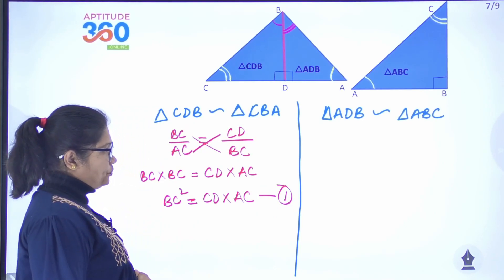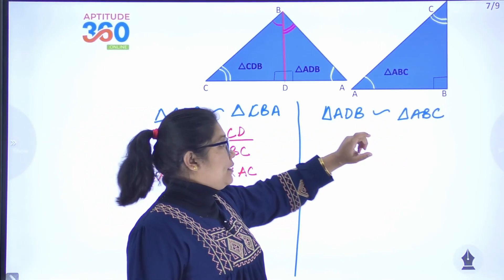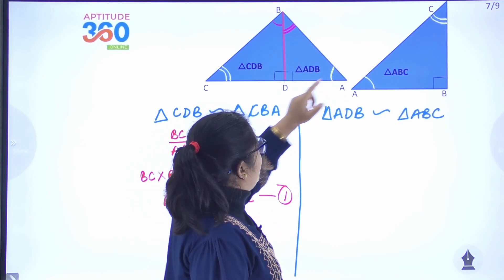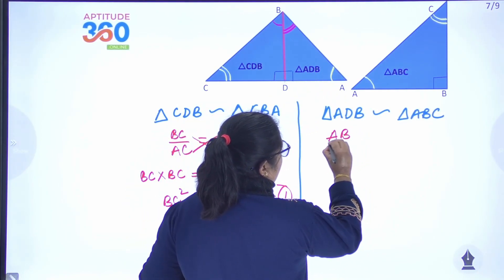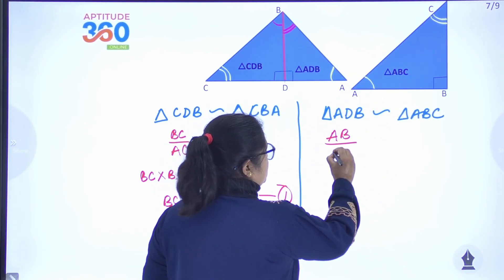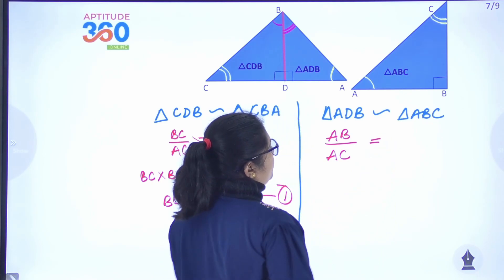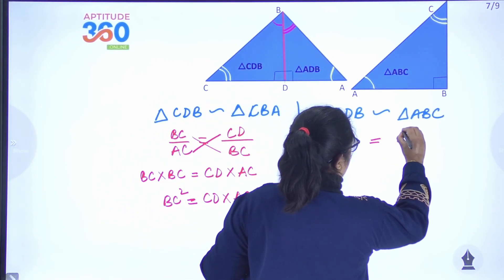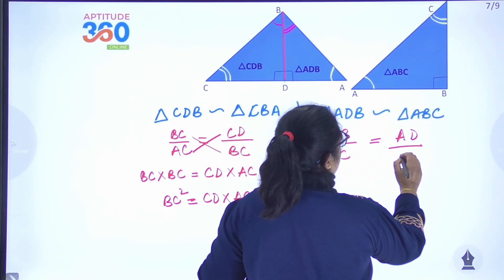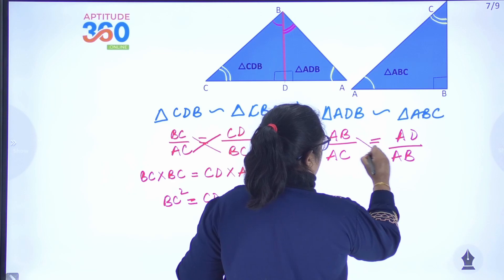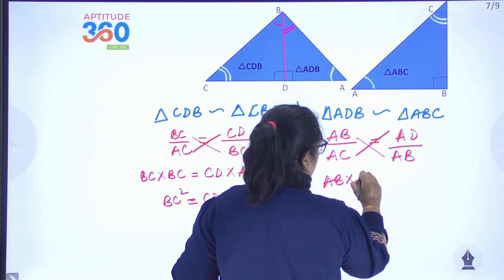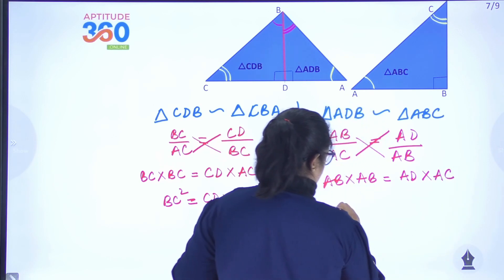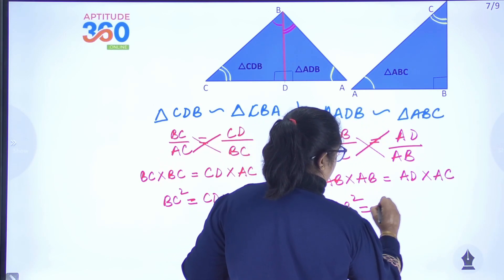From the similarity of triangle ADB and triangle ABC: the hypotenuse in ADB is AB, and in ABC it is AC. The corresponding sides give AB/AC = AD/AB. Cross-multiplying: AB × AB = AD × AC, so AB² = AD × AC. This is our second equation.